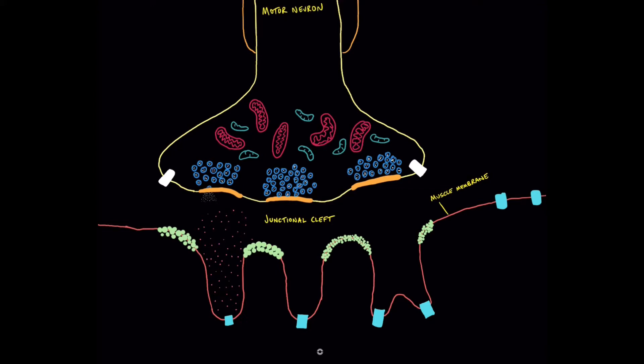The motor neuron is originally myelinated all the way down its axon until it reaches its terminal, where it loses its myelin and becomes wrapped in Schwann cells. You can see some of the structures of the nerve terminal: there are mitochondria here, important in energy production, which also help in the production of acetylcholine — the neurotransmitter that's key for neuromuscular junction physiology. There are also microtubules, which are supporting structures at the end of the nerve terminal.